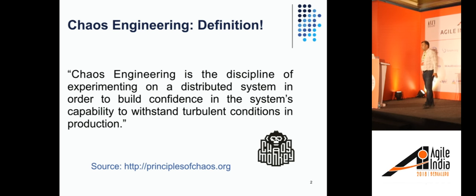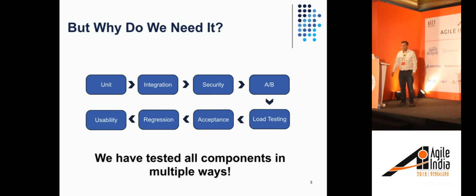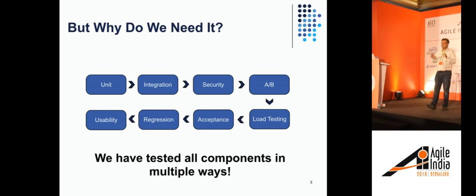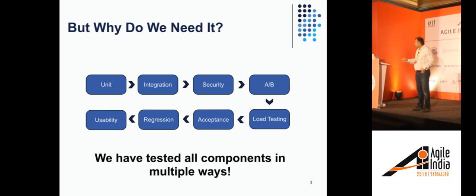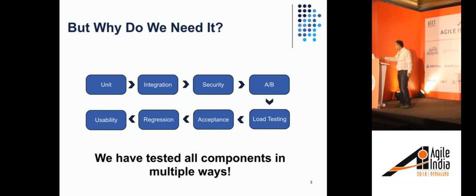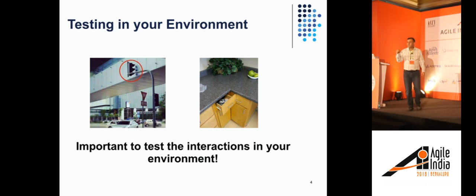Before expanding further, let's talk about why we actually need Chaos Engineering. In computer science, you learn about all sorts of testing — unit, integration, security, etc. Typically when you build a system and put it in production, you've tested your components individually and together in multiple ways. So the question is: why do we need another form of testing? With all these tests, the focus is on your actual system — how it behaves. But one thing is missing: how the system behaves when it's running in an actual environment. Unit testing and even integration testing focus on the code, not the interaction between the code and the environment.